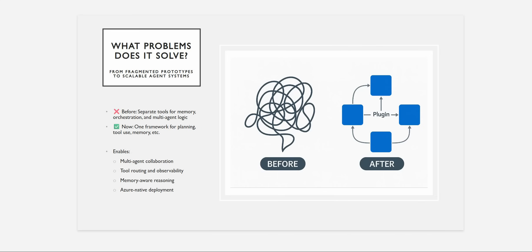If you want to plug in dependencies, tools, or services together, this framework can help. It enables multi-agent collaboration, tool routing, and observability — you get traces and logs of everything your agents generate. It also provides memory-aware reasoning, making it easy to integrate with AI Search, Redis, or any other search solution. Finally, it supports Azure-native development, so if you're using AI Foundry you can use this framework for deployment.